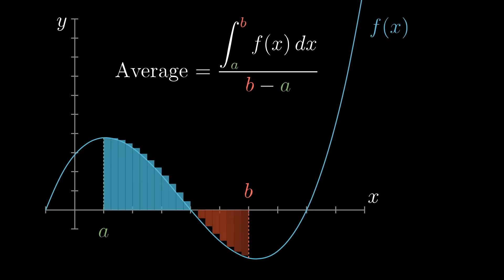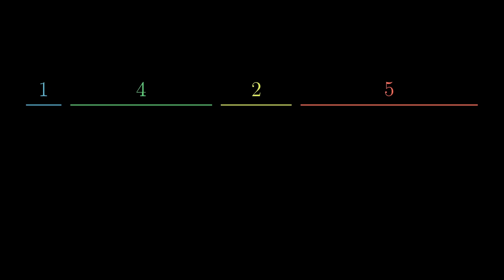You can think of this as the area under the graph divided by its width, or more accurately, it is the signed area of that graph, since any area below the x-axis is counted as negative. And it's worth taking a moment to remember what this area has to do with the usual notion of a finite average, where you add up many numbers and divide by how many there are.